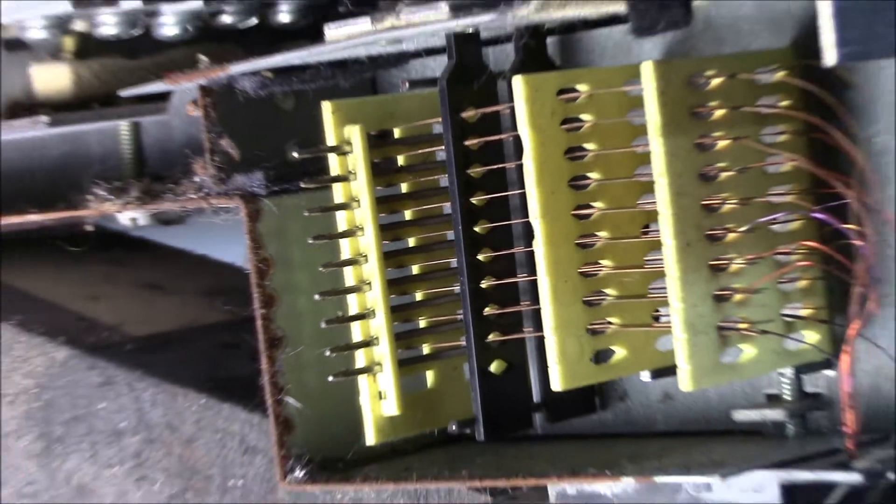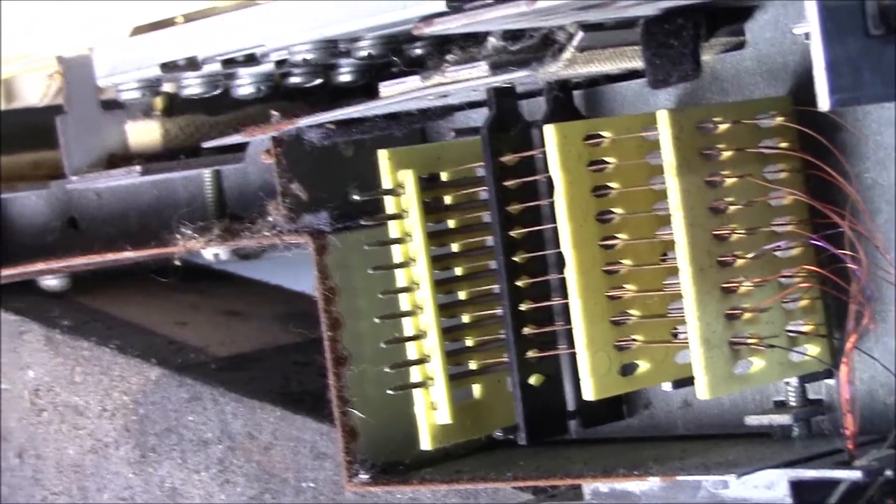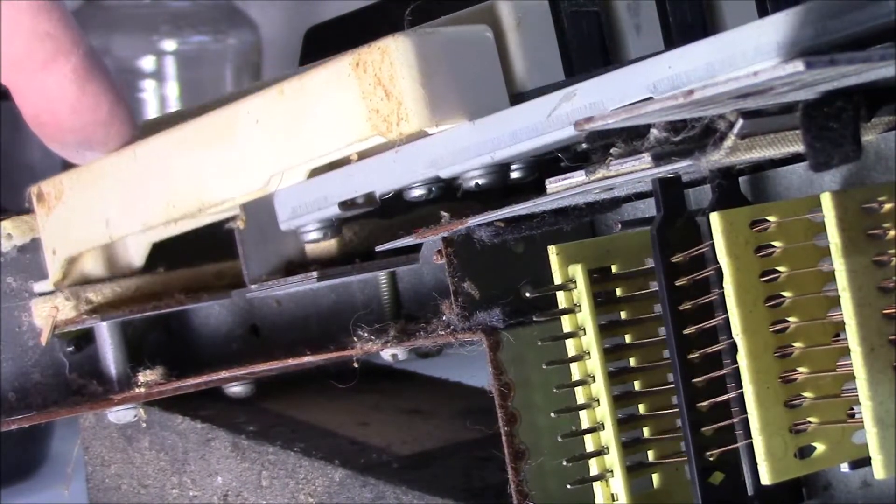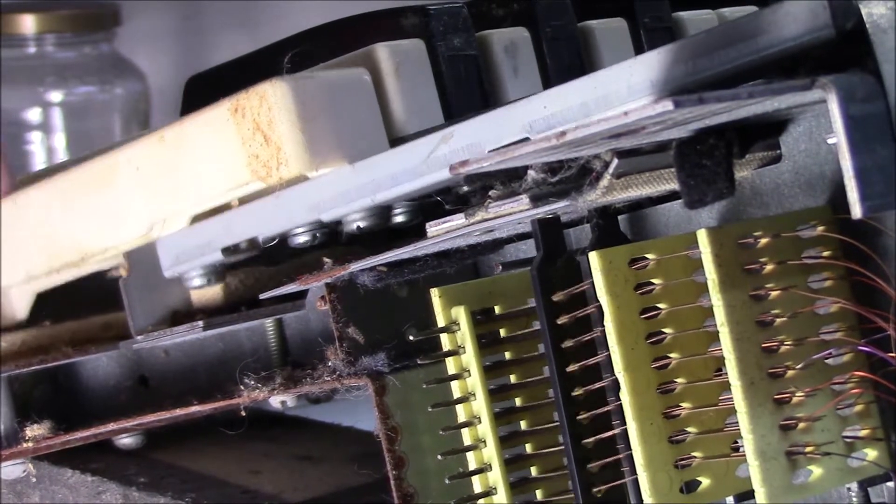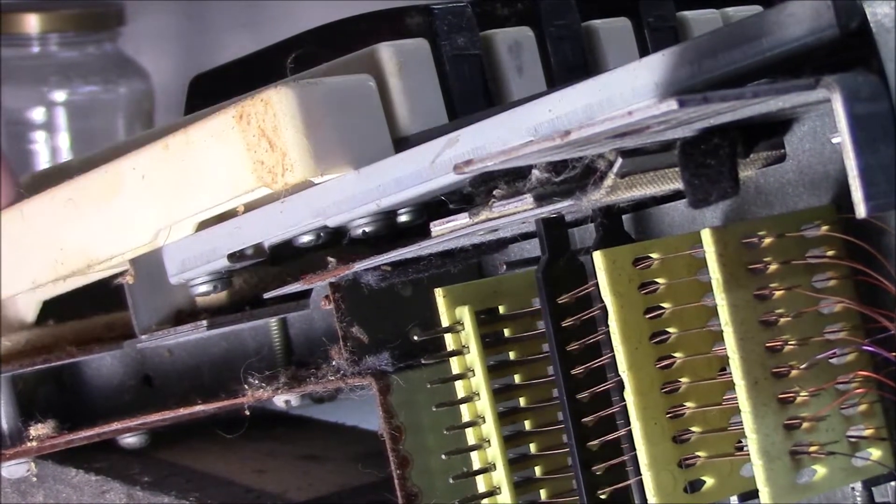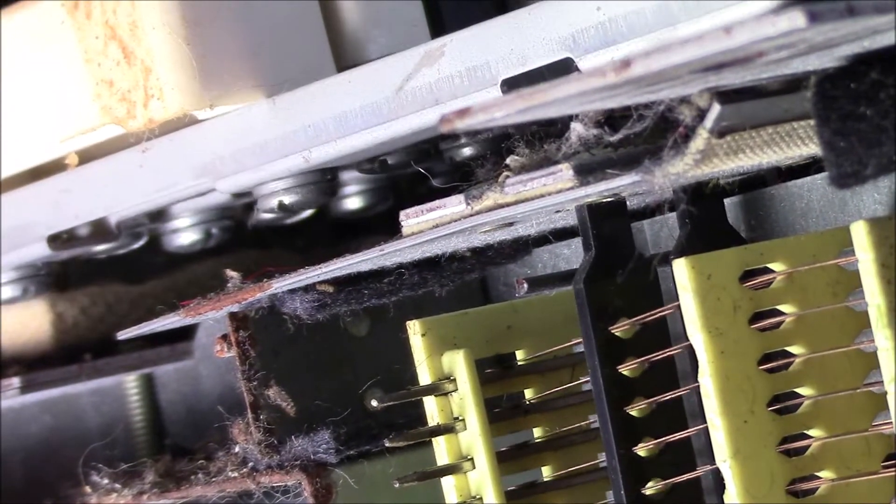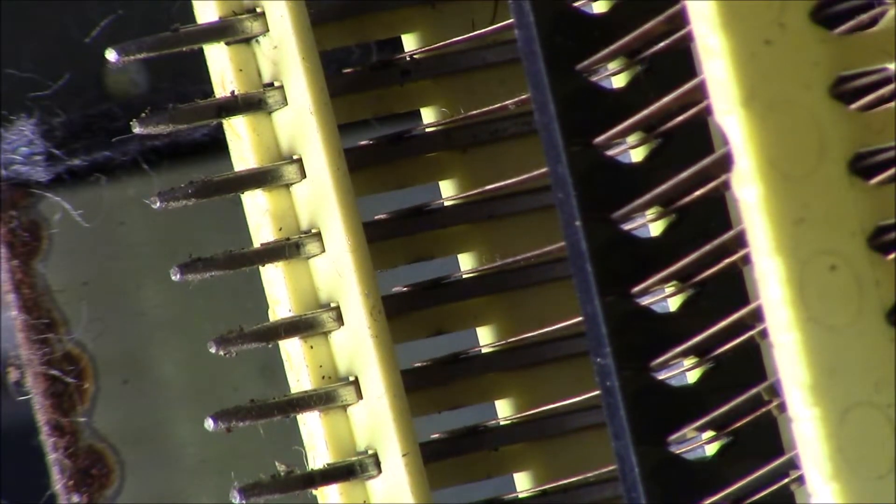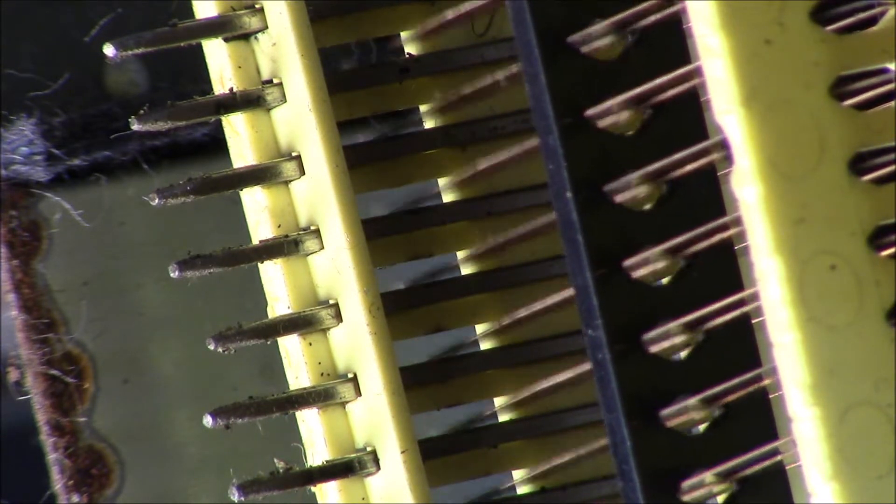When you push down a key, the key pushes the actuator down, that black part there. The actuator pushes all of the contacts at the same time or close to it and makes a connection between the contact and the bus bar. You'll also notice that after the contact touches, it bows ever so slightly. That bowing causes the contact to scrape along the bus bar, making these contacts in effect self-cleaning.